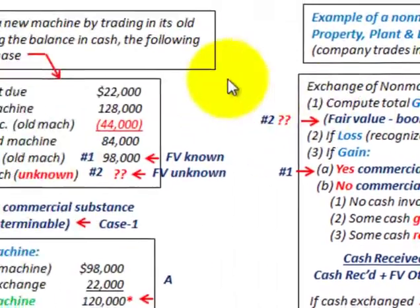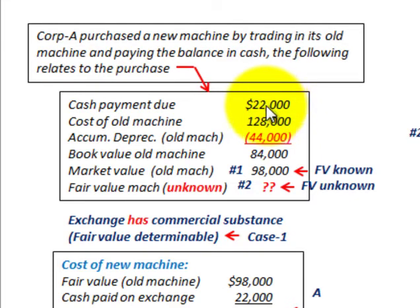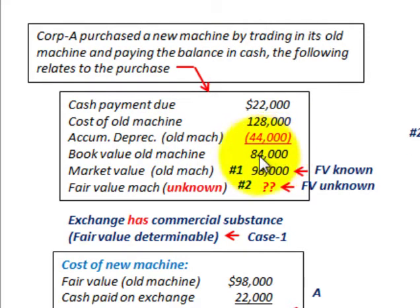Corporation A purchased a new machine by trading in its old machine and paying the balance in cash. They're going to have a cash payment of twenty-two thousand dollars on this exchange. We need to know the cost of the old machine and the accumulated depreciation on it. The difference between the cost and accumulated depreciation gives us the book value of the old machine: eighty-four thousand dollars.